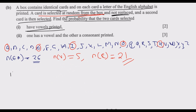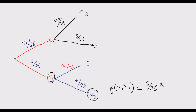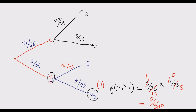For part (i), both cards are vowels. There is only one path: first vowel then second vowel. So P(both vowels) = (5/26) × (4/25). Simplifying: 5 into 5 gives 1, 5 into 25 gives 5; 2 into 4 gives 2, 2 into 26 gives 13. So we get (1 × 2) / (13 × 5) = 2/65.